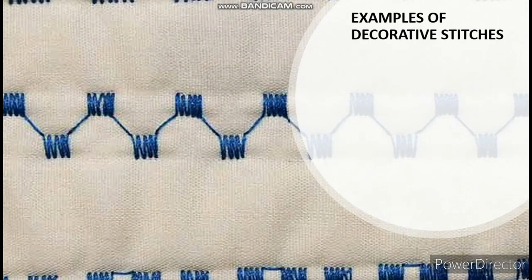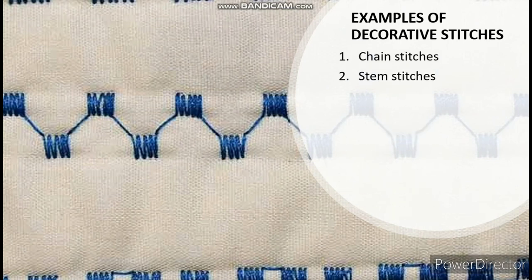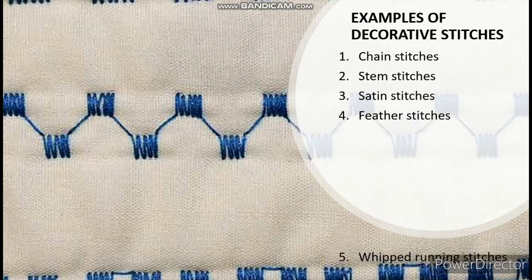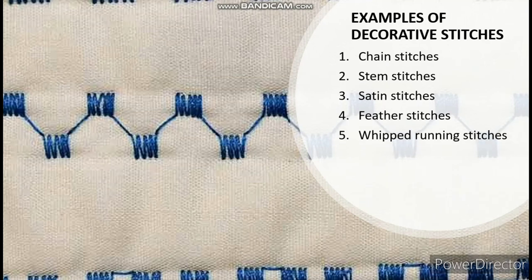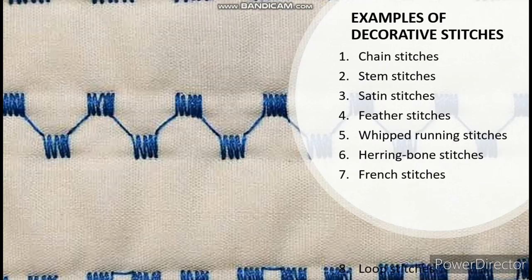What are the examples of decorative stitches? They are chain stitches, stem stitches, satin stitches, feather stitches, whip running stitches, hairy bone stitches, French knot, and loop stitches. We will take them one by one with explanation.